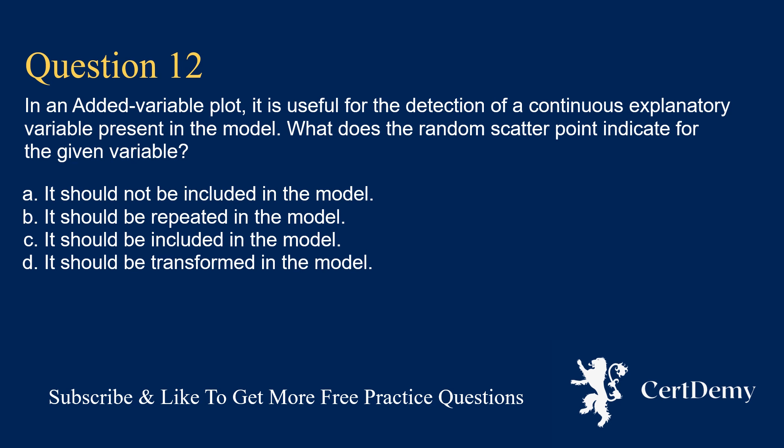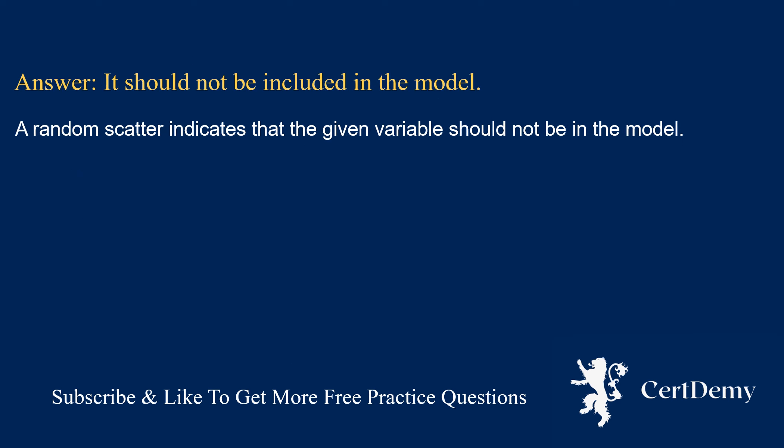Question 12. In an added variable plot, useful for detection of a continuous explanatory variable, what does a random scatter of points indicate for the given variable? Options: it should not be included; it should be repeated; it should be included; it should be transformed. The answer is: it should not be included in the model. A random scatter indicates that the given variable should not be in the model.